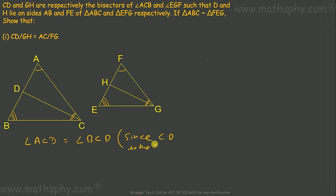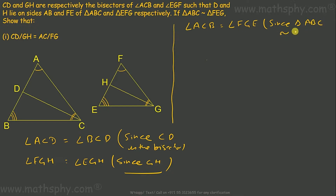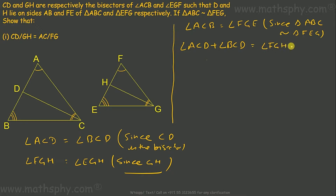Since CD is the bisector, angle ACD equals angle BCD. And since GH is the bisector, angle FGH equals angle EGH. Now angle ACB equals angle FGE since triangle ABC is similar to triangle FEG. We can write angle ACB as angle ACD plus angle BCD, and angle FGE as angle FGH plus angle EGH.